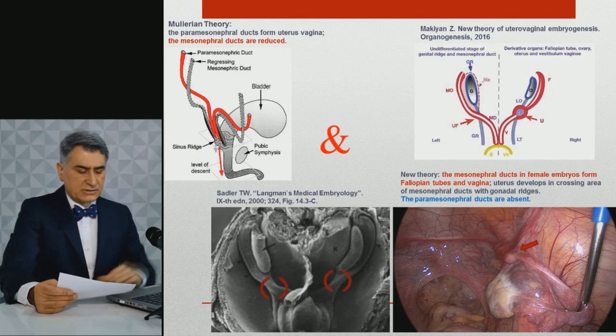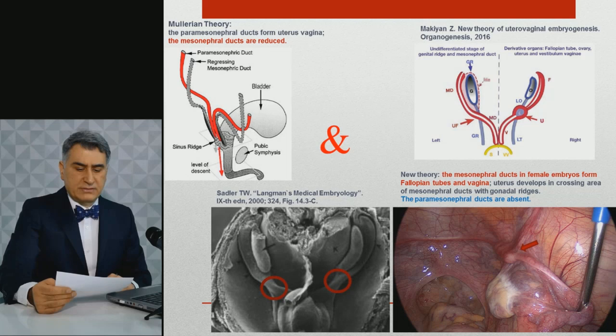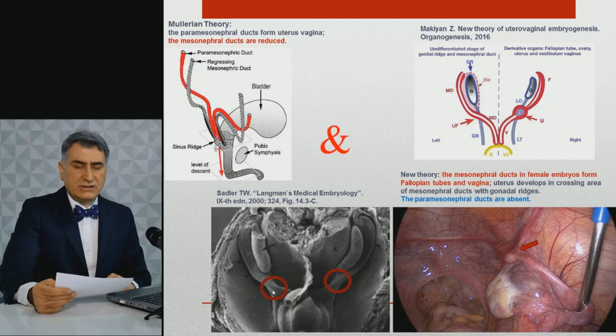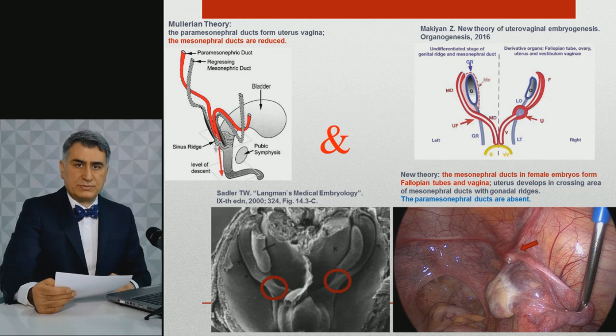In Langman's Medical Embryology, there is an electron micrograph of a mouse female embryo. Mesonephral ducts, indicated by black arrowheads, are located on the paramedial sites of the mesonephros and are conjoined together. The genital ridges are growing immediately below the gonads. The area of intersection between the mesonephral ducts and gonadal ridges corresponds to the uterine faults. This picture of an early developmental stage corresponds to the anatomy of uterovaginal aplasia, where uterine rudiments are detected in the area of intersection between the fallopian tubes with the broad and ovarian ligaments.